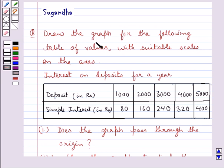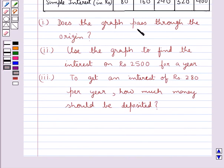The question says: draw the graph for the following table of values with suitable scales on the axis. The table is for the interest on deposits for a year. In this table we are given the deposits and the simple interest. Does the graph pass through the origin? Use the graph to find the interest on Rs.2500 for a year. To get an interest of Rs.280 per year, how much money should be deposited?